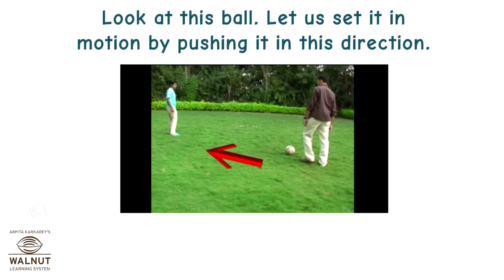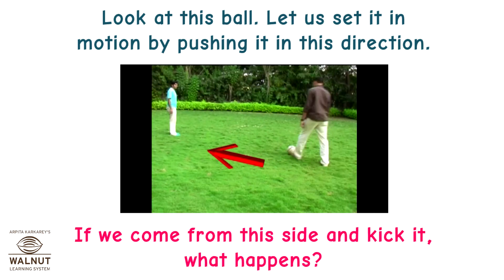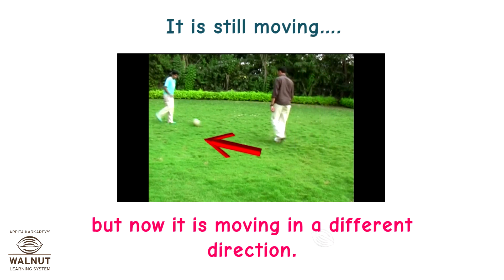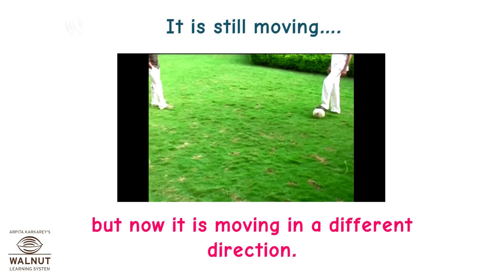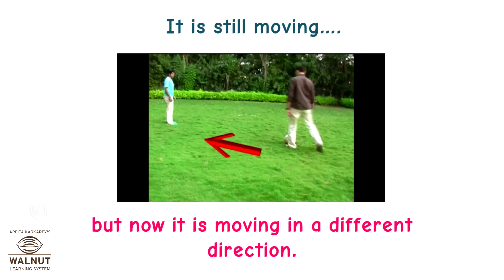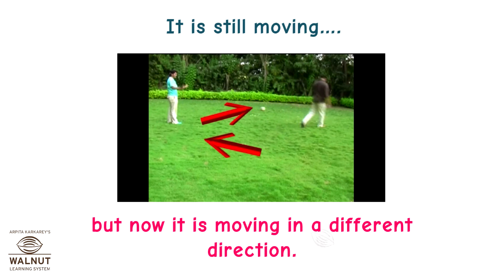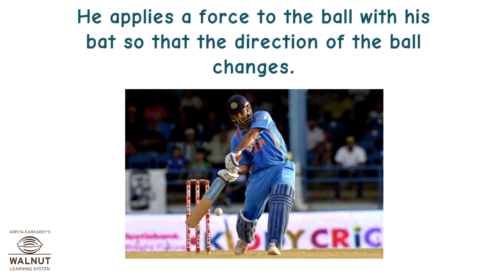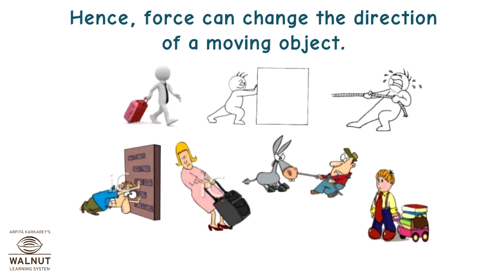Look at this ball. Let us set it in motion by pushing it in this direction. If we come from this side and kick it, what happens? It is still moving, but now it is moving in a different direction. When the bowler bowls to the batsman in cricket, what does the batsman do? He applies a force to the ball with his bat so that the direction of the ball changes. Hence, force can change the direction of a moving object.